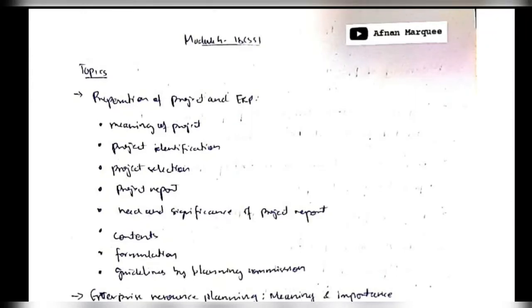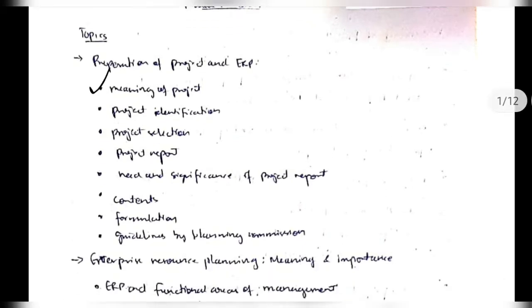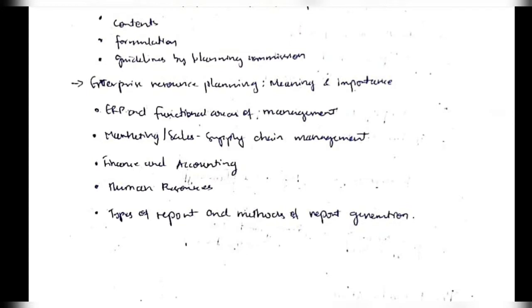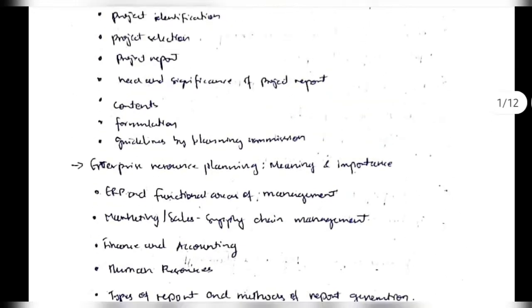Hello everyone. Today in this video we will be discussing the fourth module of 18CS51. In this module we have some topics about the project and ERP, which means enterprise resource planning. We will be discussing what is a project, identification, selection, how to maintain the project, the need and significance, and the guidelines to organize the project. Then we will discuss about resource planning and the different domains in which ERP is used, how to make effective use of ERP, and the types and methods of report generation.